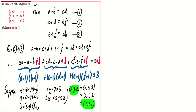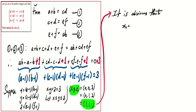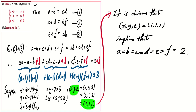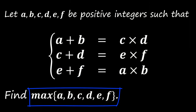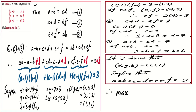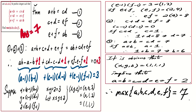Finally, for the case x equals y equals z equals 1, it is obvious that all of a, b, c, d, e, f must be equal to 2. Recalling today's question — we are asked to find the maximum value of a, b, c, d, e, f. From case 1 and case 3 we conclude that the maximum value is 7, so 7 is the answer. Hope you enjoyed this video — I'll see you again next time, bye bye.